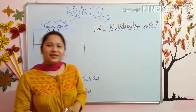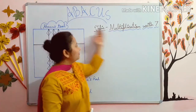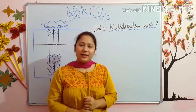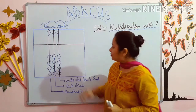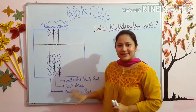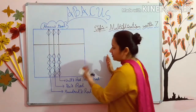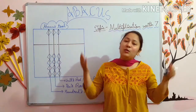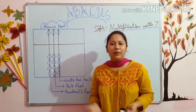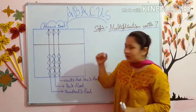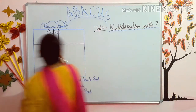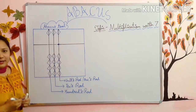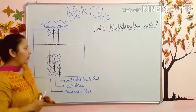So students, our today's topic is multiplication with 7. But before starting our today's topic, I want to tell you something about the Abacus tool. This Abacus tool is not new for you. You have already seen it and you are using this tool in your sums. So kids, I want to tell you that this is the mid-rod of the Abacus tool — the middle rod.